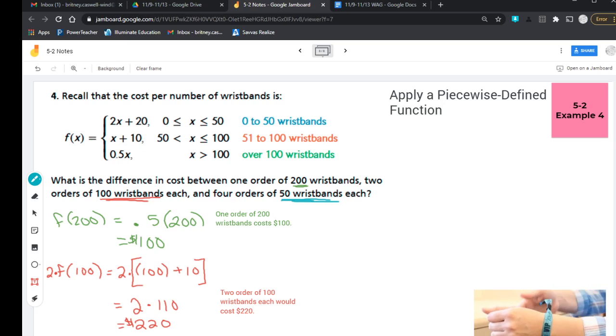So f(50), I'm going to take this equation. I'm going to say two times 50 plus 20. And so that 50 is in there. And the four, again, is coming because we're ordering four orders of the 50 wristbands. So here we go.